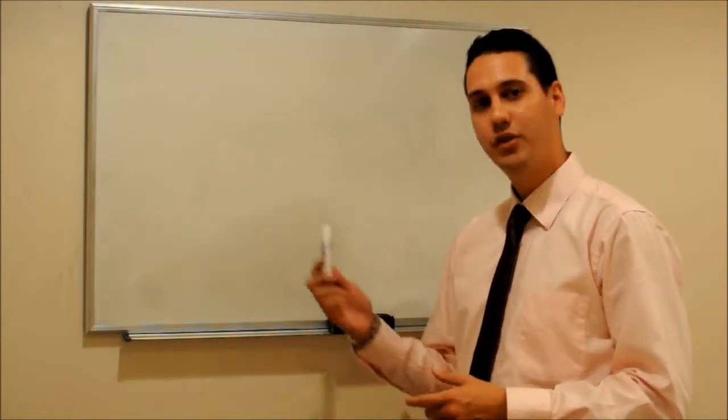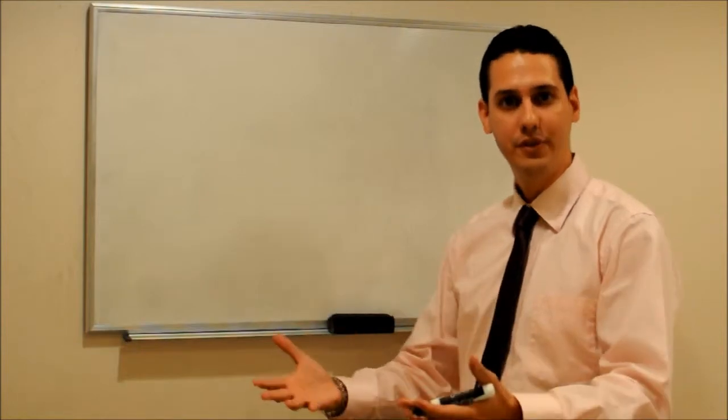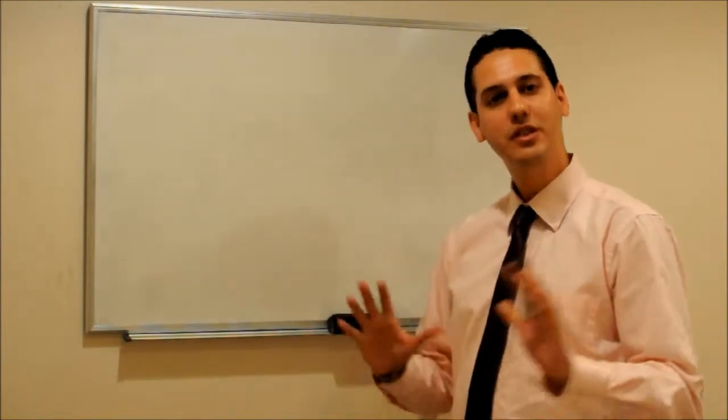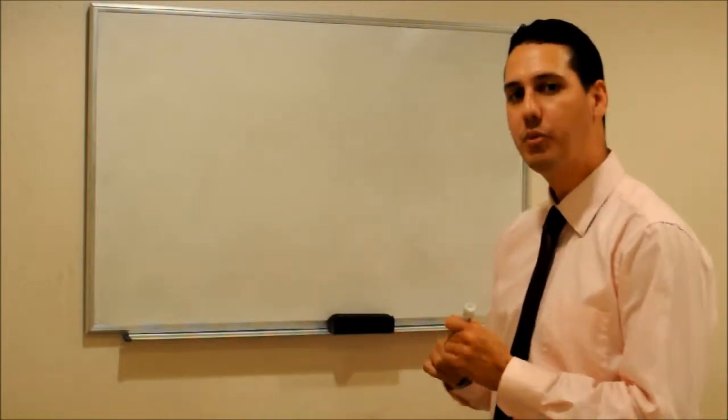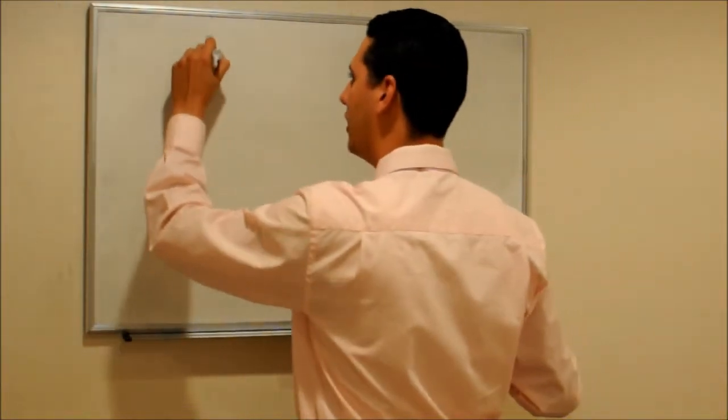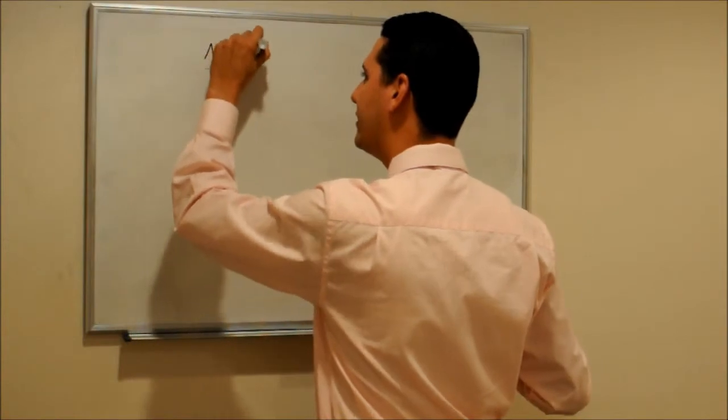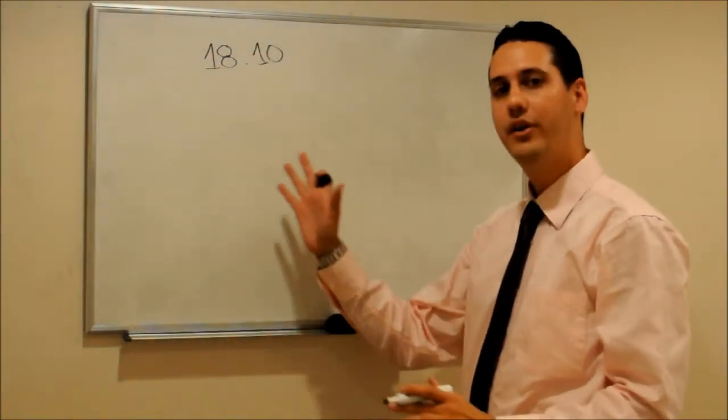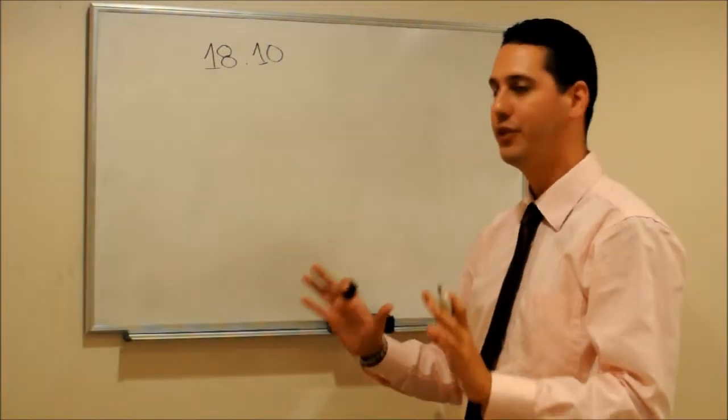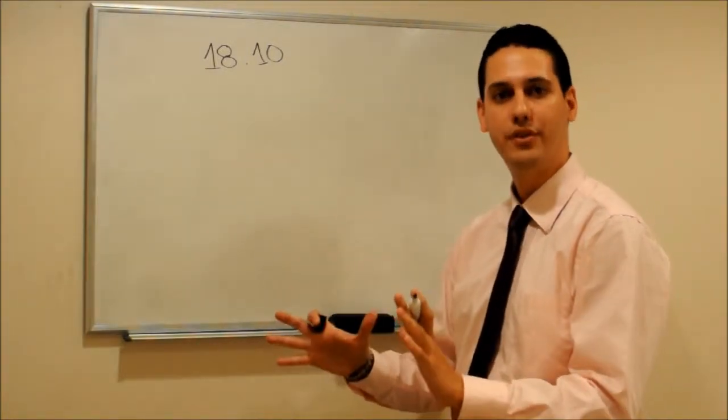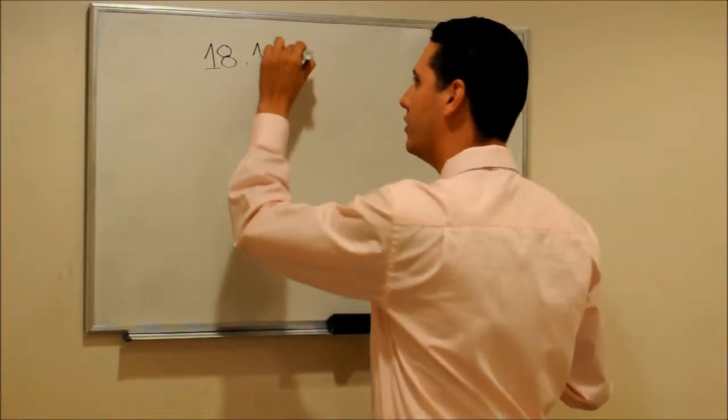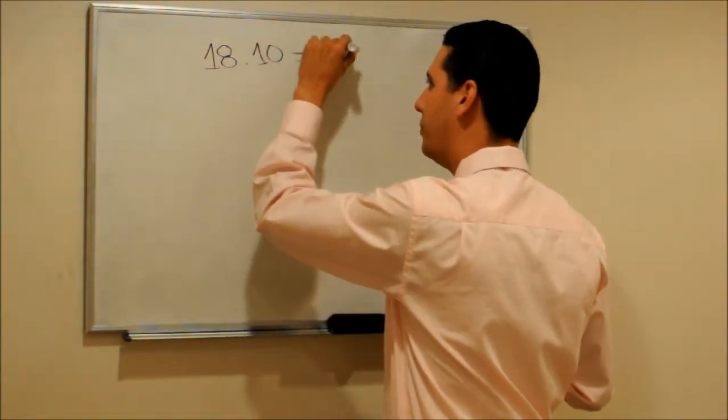The objective of this course is to show you my algorithms so you can do the same I do. So let's start with simple calculations. For example, let's say we want to multiply 18 times 10. The goal here is to show you that we need to start from the beginning and understand numbers. Multiplying by 10 is something easy. We just add a zero. So the answer would be 180.